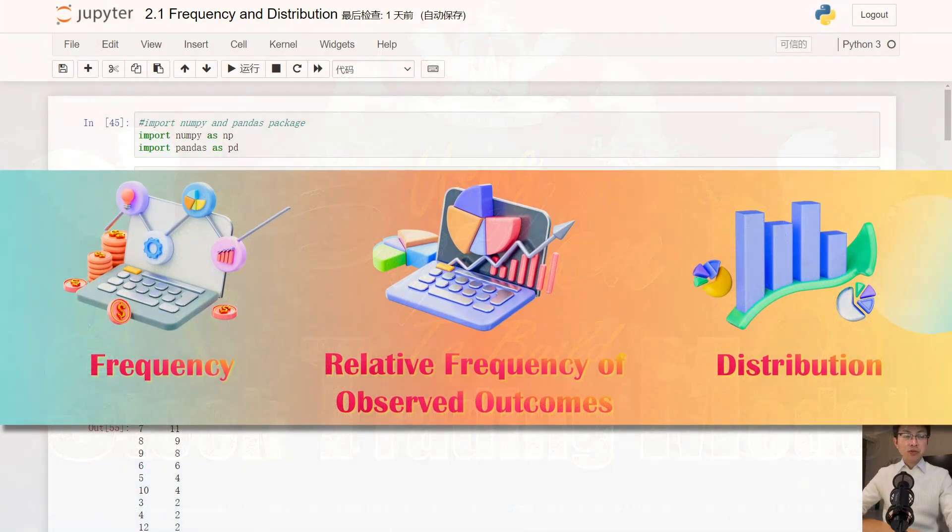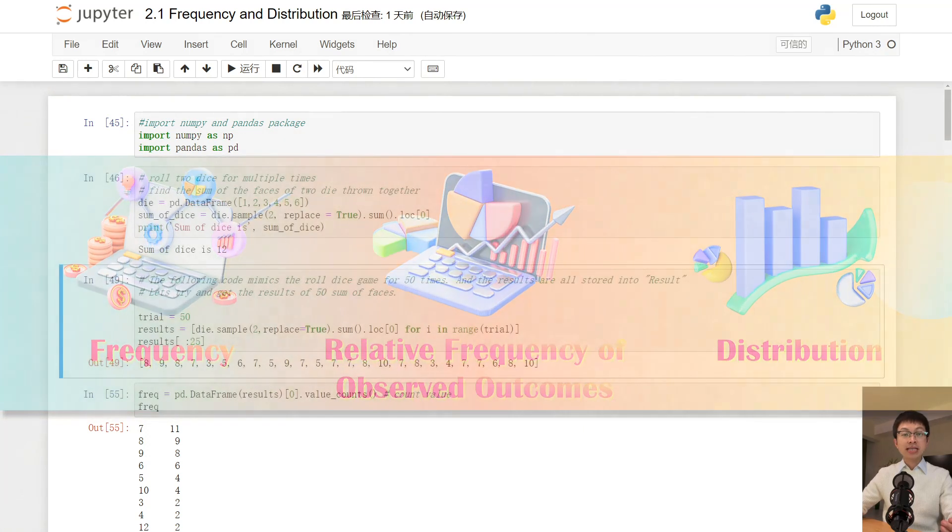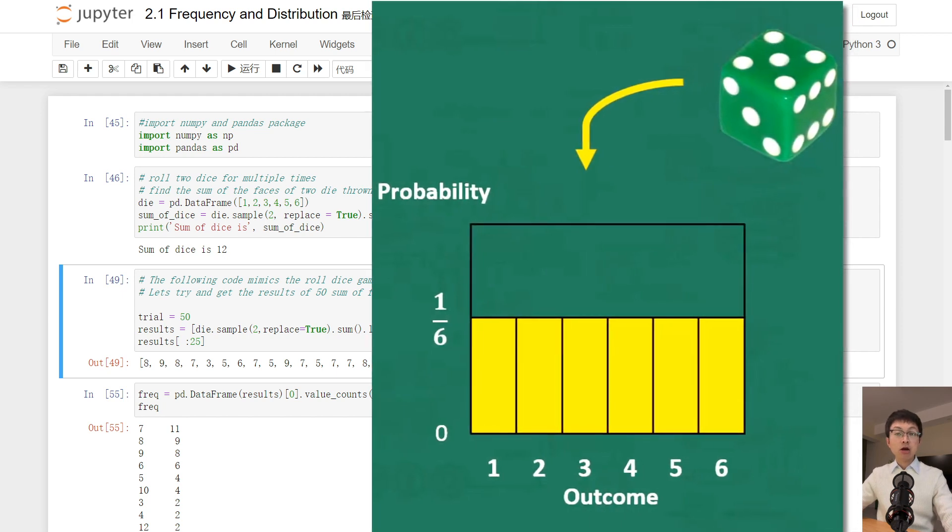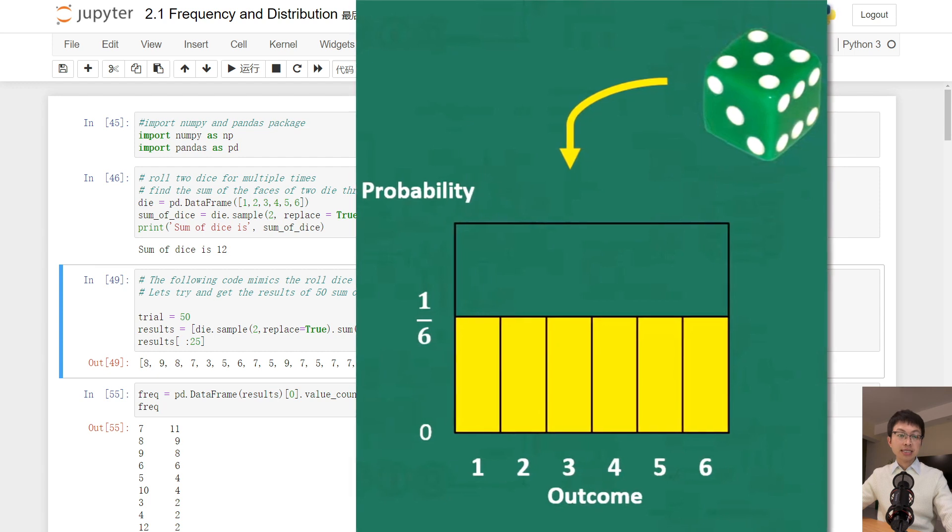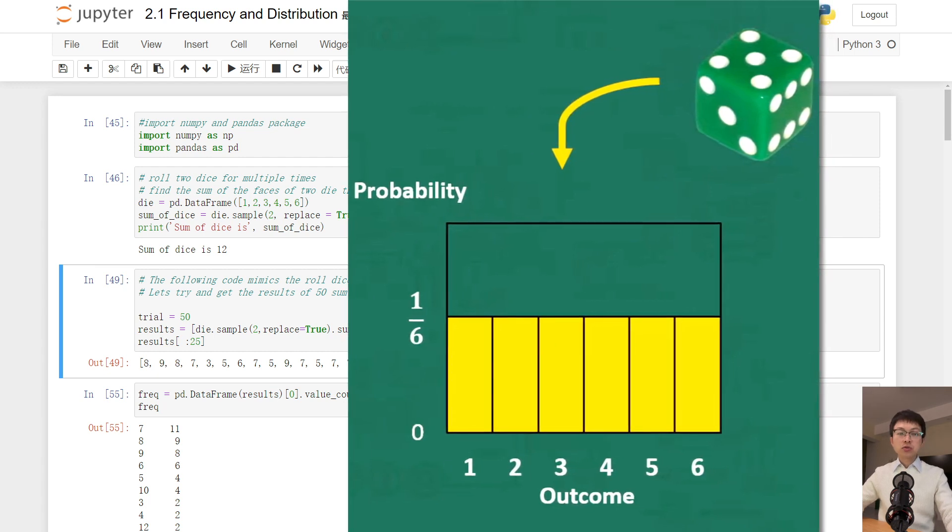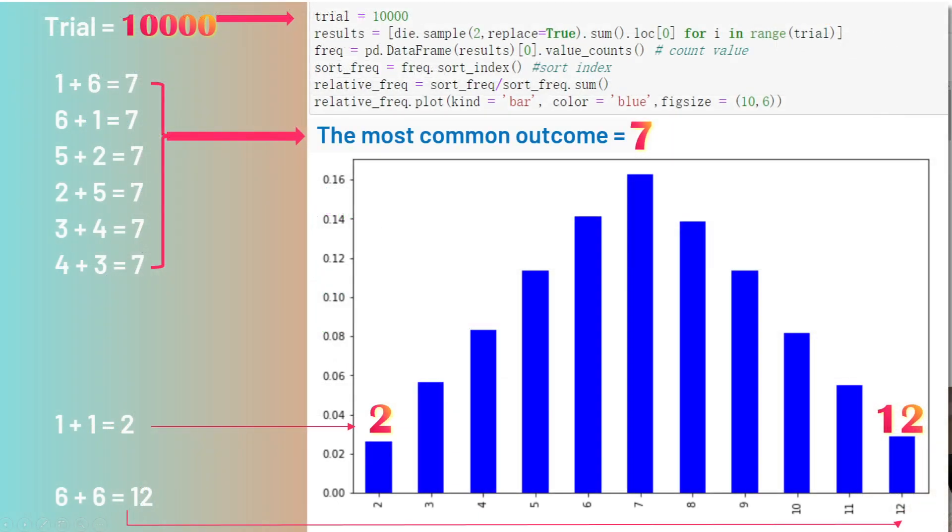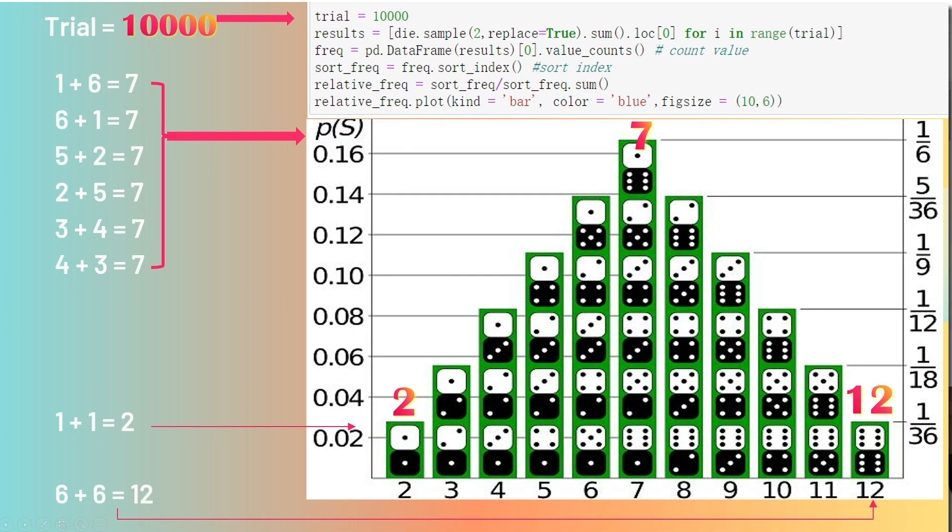To recap, we will use the die scan from the previous video as an example. As you can see, each die has a 1/6 probability of rolling any single number 1 through 6. But the sum of two dice will form the probability distribution. If we roll the dice 10,000 times, as you can see here, 7 is the most common outcome.